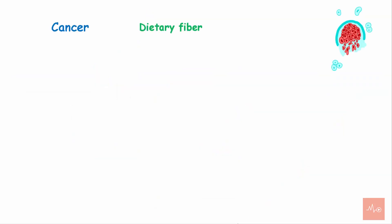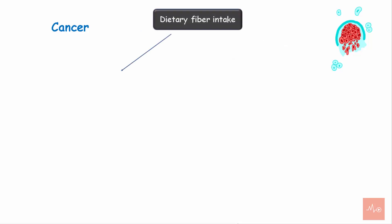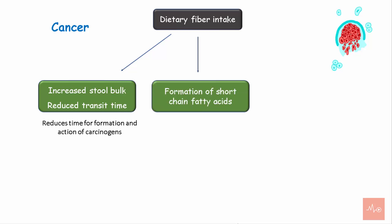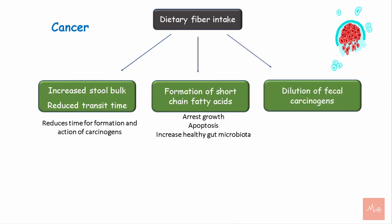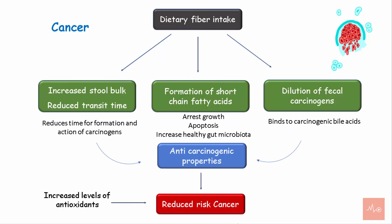Regarding the effect on cancer: dietary fiber acts as a protective factor for the large intestine and prevents colon cancer or colorectal adenoma. Dietary fiber intake increases stool bulk and reduces transit time in the intestine, which reduces the time for formation and action of carcinogens. Dietary fiber also resists digestion in the small intestine and gets fermented in the large intestine to form short-chain fatty acids that arrest the growth of cancer cells and cause their apoptosis, with increased healthy gut microbiota. There is dilution of fecal carcinogens as dietary fibers favor binding of bile acids to carcinogens. Dietary fiber also increases the level of antioxidants, which reduces the risk of colon cancer.